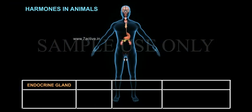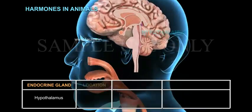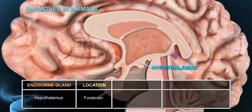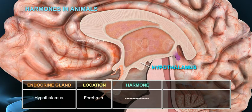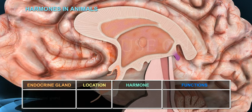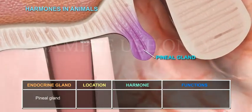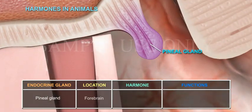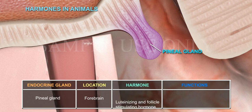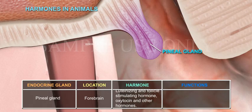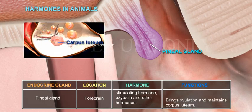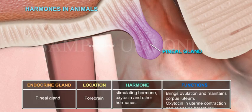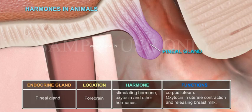The Hypothalamus is located in the brain and serves as the main center and relay station of the endocrine system. The Pineal gland is located in the forebrain. Its hormones include luteinizing hormone, follicle stimulating hormone, oxytocin, and other hormones. Its functions include bringing about ovulation, maintaining the corpus luteum, and oxytocin is involved in uterine contraction and releasing breast milk.